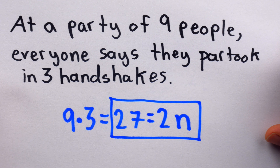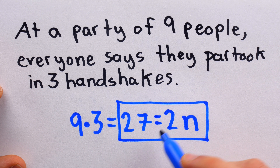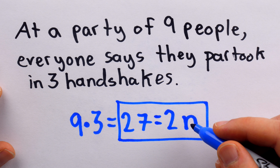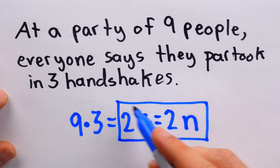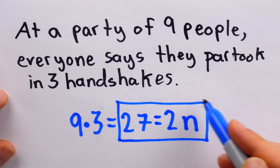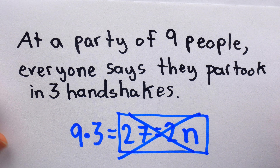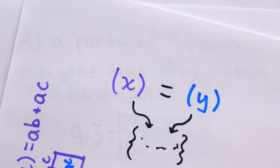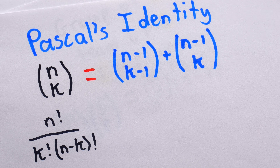These two expressions are equal because they count the same thing — the number of times somebody participated in a handshake at the party. But clearly, this equation cannot be true. n, the number of handshakes, is an integer, and there's no way an even number — two times an integer — can equal 27. The left side is odd, the right side is even. This can't be possible, and so somebody here is being duplicitous — somebody is lying about the number of times they shook hands. Those are some fun examples of double counting, a classic and really cool combinatorial proof technique.